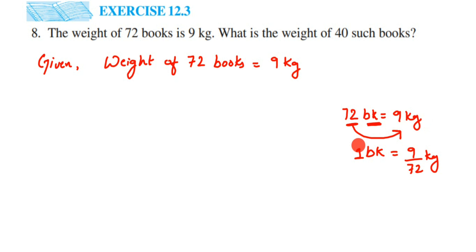Now I know how to find out that, how to divide 9 by 72. So therefore, therefore weight of 1 book is equal to, it's 9 divided by 72 kg.